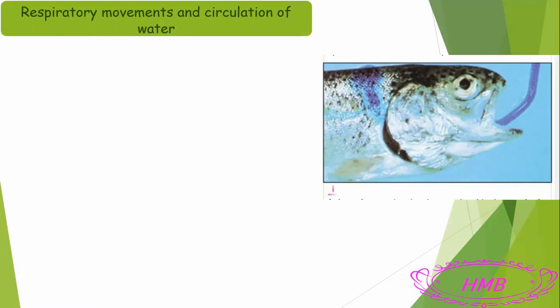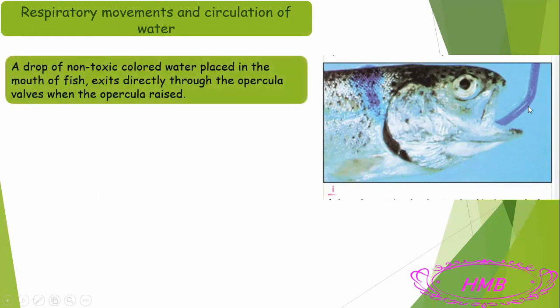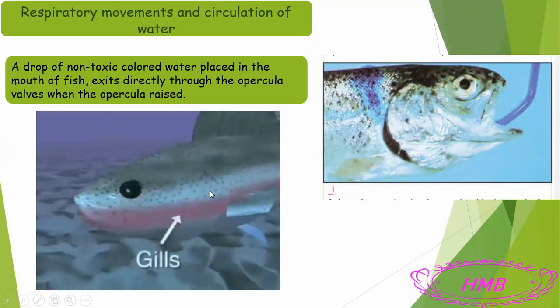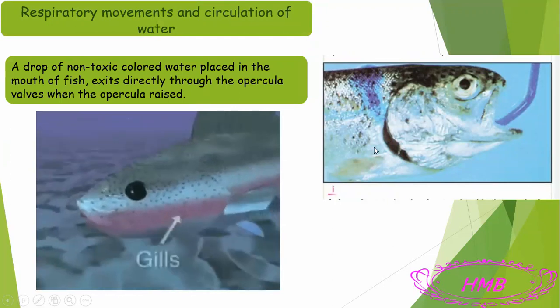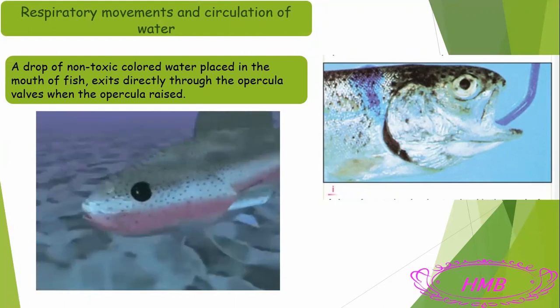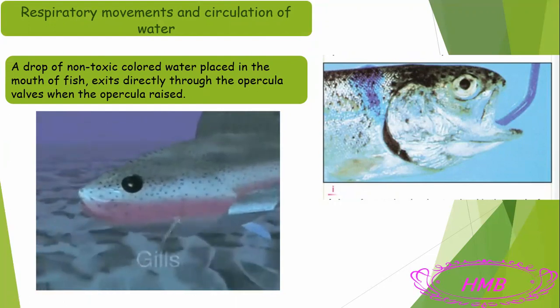Scientists performed an experiment on fish to see how water moves inside the fish's body. They placed non-toxic colored water in the mouth of the fish and found that this colored liquid went directly through the opercula — the opening on the side of the head. When the opercula raised up, the water went out. This was evidence that water enters through the mouth and exits from the gills or the opercula, carrying carbon dioxide with it.